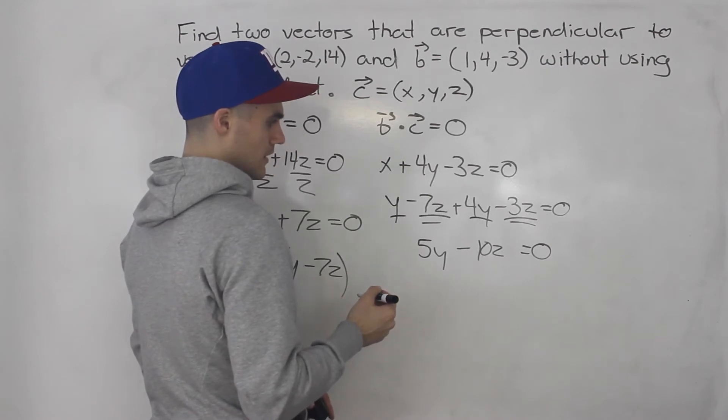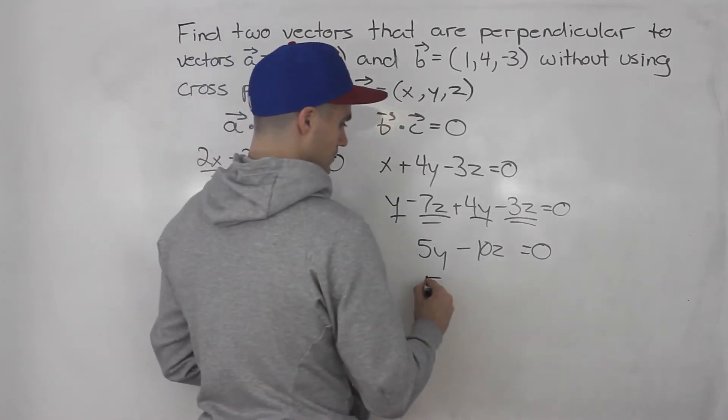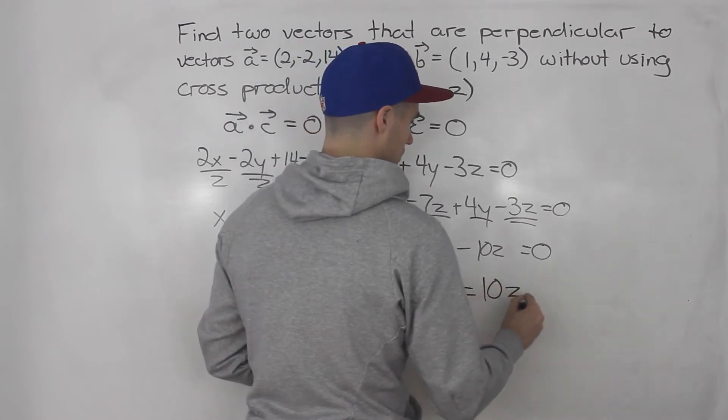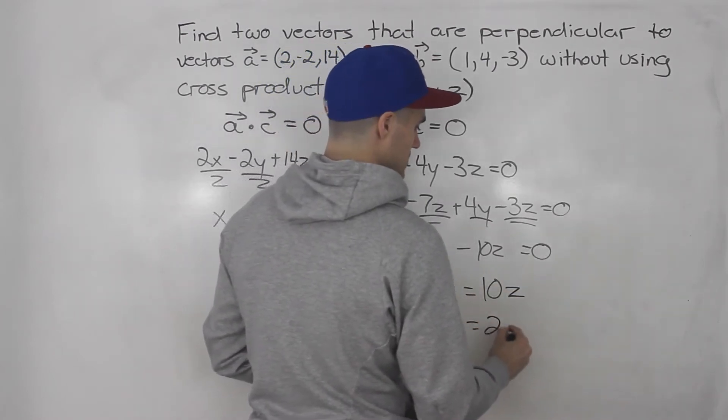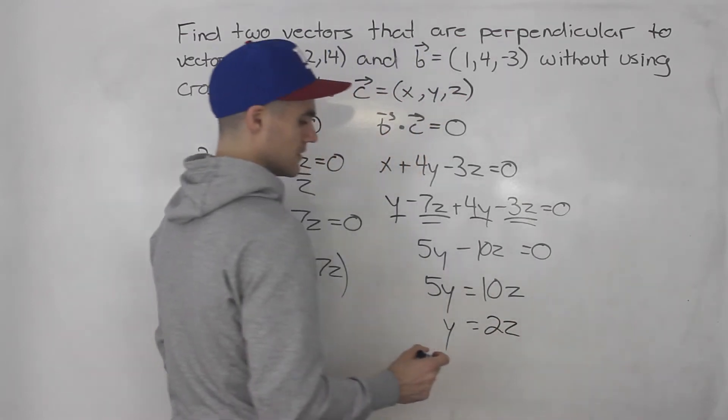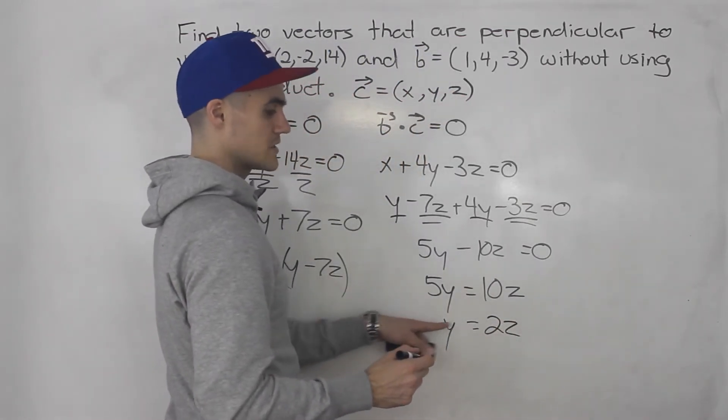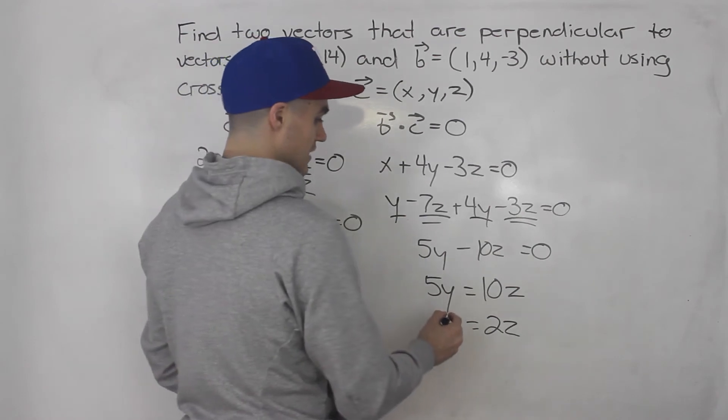And then what can we do here? So it means 5Y always has to equal 10Z. Divide both sides by 5 means that Y is always equal to 2Z. Right? So Y is always doubled whatever the Z value is.